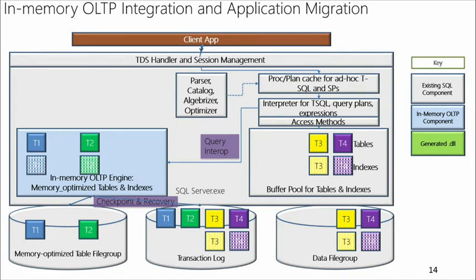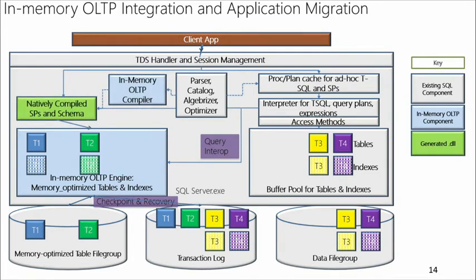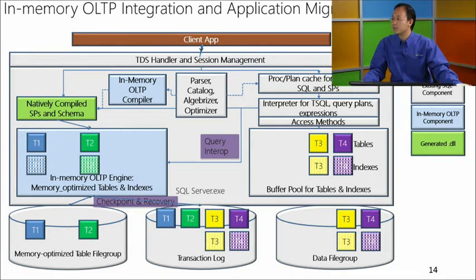However, query interop mode is not the fastest path. The fastest path is natively compiled stored procedures, which are compiled with our own compiler. Business logic and operations like joins get compiled into a native DLL and run at native speed. In the current SQL 2014 version, natively compiled stored procedures can only access in-memory OLTP tables. But this is the fast path for both business logic and data access. What kind of performance improvement can a typical business application expect?